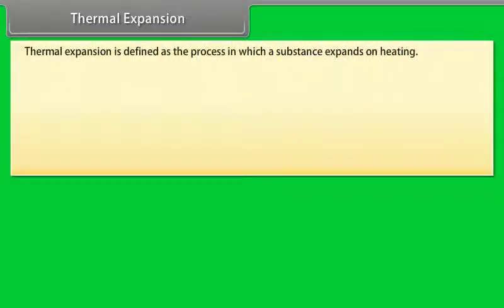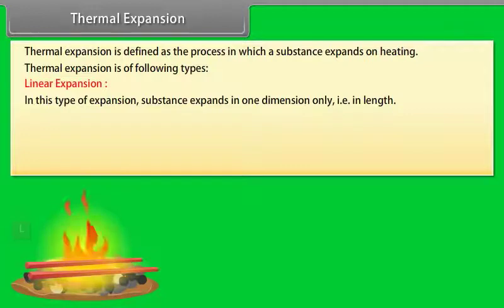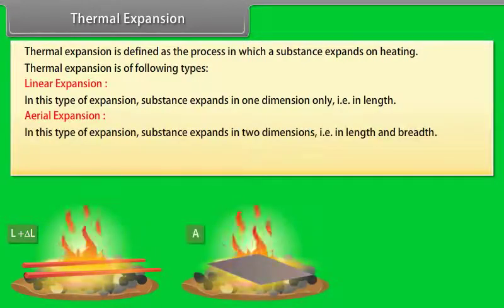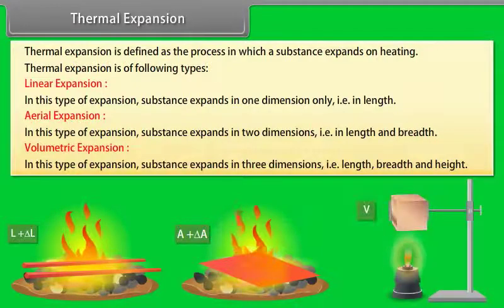Thermal expansion is defined as the process in which a substance expands on heating. Thermal expansion is of the following types: (1) Linear expansion — the substance expands in one dimension only, that is in length; (2) Aerial expansion — the substance expands in two dimensions, that is in length and breadth; (3) Volumetric expansion — the substance expands in three dimensions, that is in length, breadth, and height.